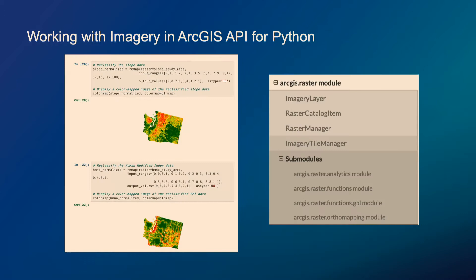Working with imagery with the ArcGIS API for Python, there are four modules: the imagery layer, the raster catalog item, raster manager, and imagery tile manager. In terms of submodules, as Python has grown across the platform we've incorporated modules like analytics, which can allow you to drive raster analytics through the Python API. We also have the orthomapping module, which allows you to drive orthomapping through the ArcGIS API for Python.